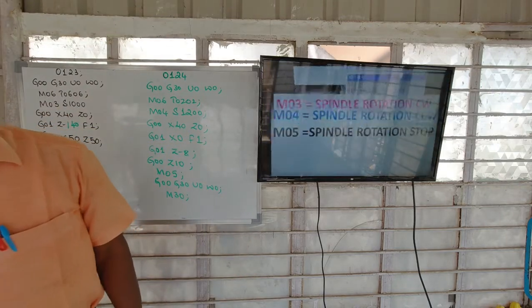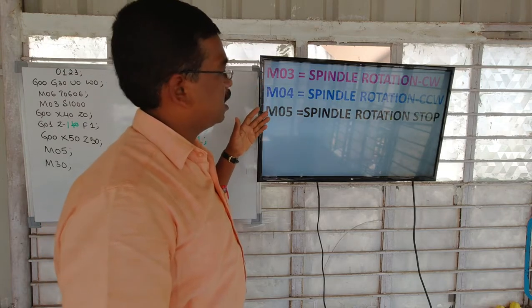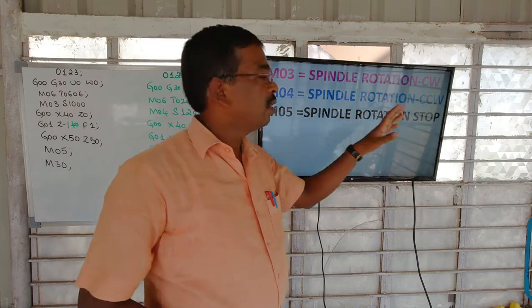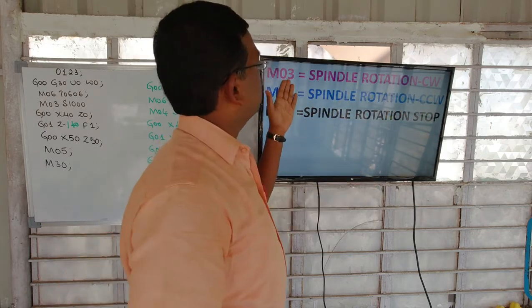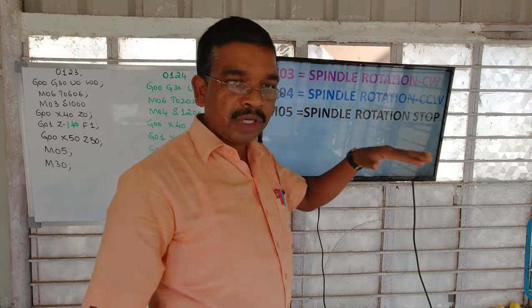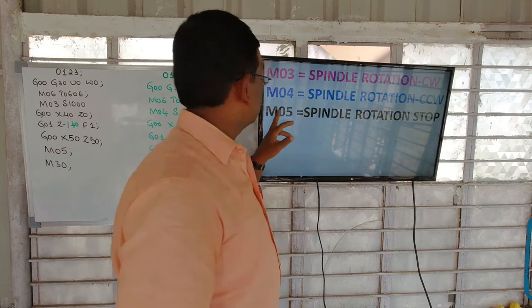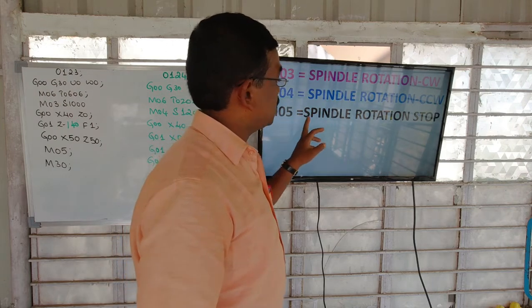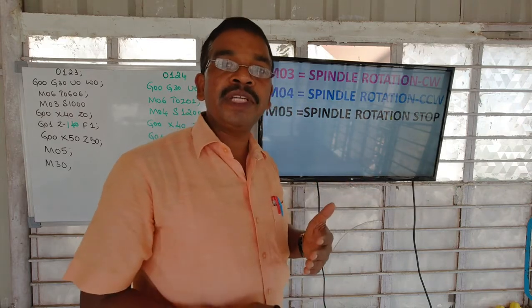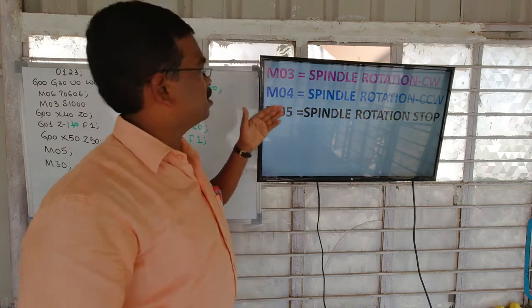So what are the M codes? Today we will discuss about M03, M04, and M05. As you know already, M03 is spindle rotation in clockwise. For rotating the spindle, we have to give the command M03. M04 is for spindle rotation counterclockwise — for rotating the workpiece in the reverse direction, we have to give M04 in the program. M05 is the spindle rotation stop. For stopping the rotating workpiece or the spindle, we have to give M05 in the program.